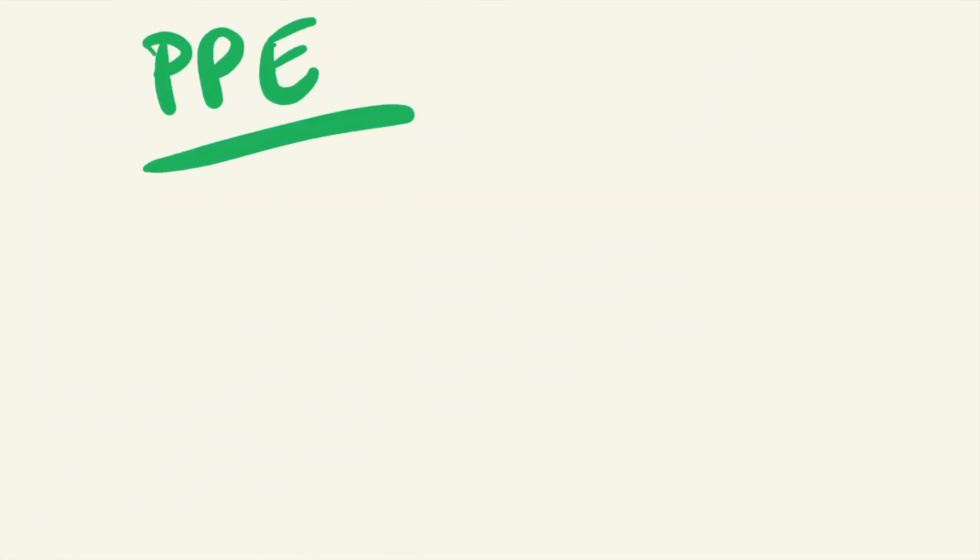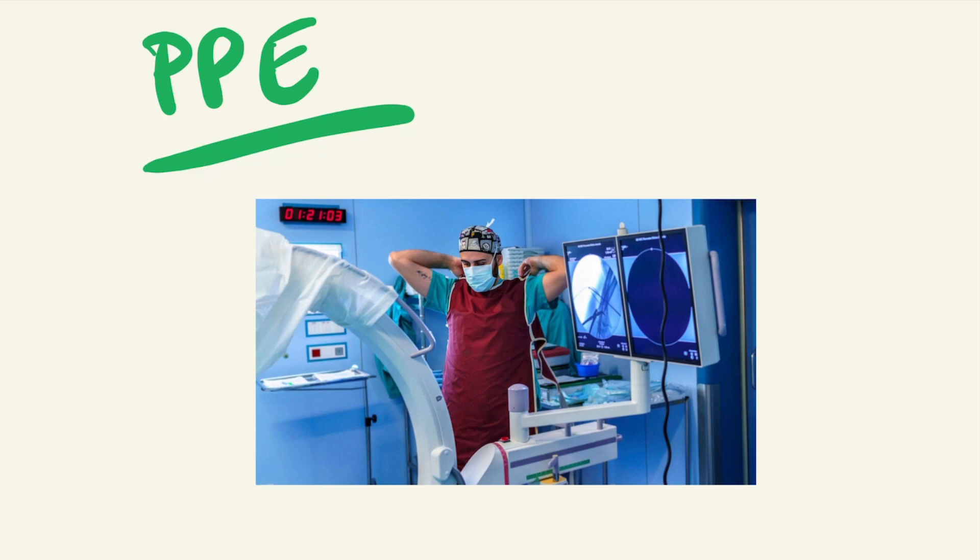And finally, PPE. This involves personal shielding, which may involve the whole body or specific areas of the body, such as thyroid or reproductive organs.